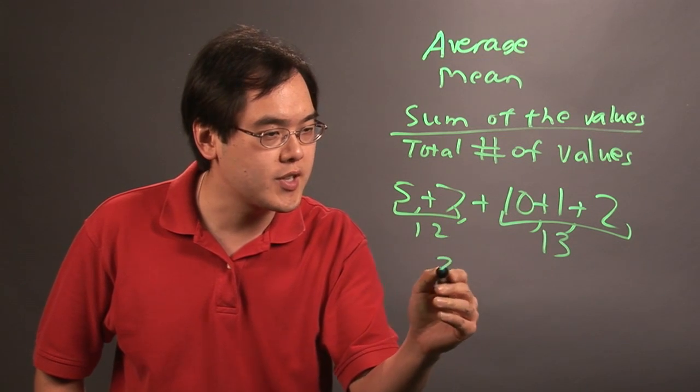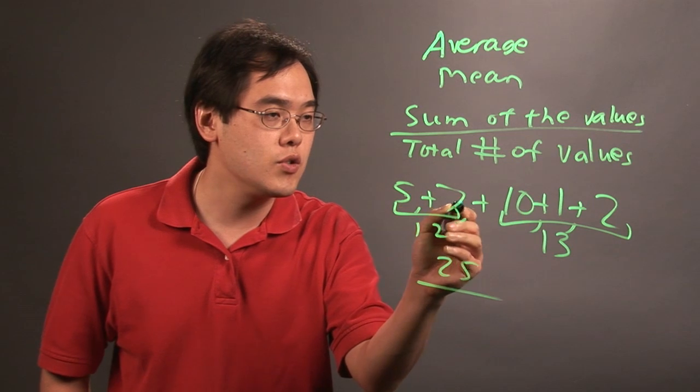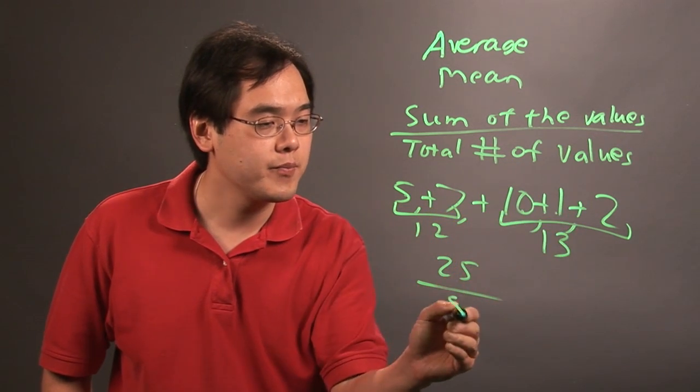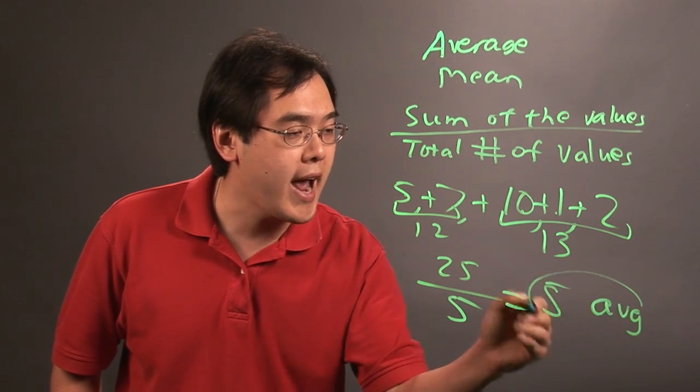So 12 plus 13, that's going to give you 25. And then you want to divide by how many numbers that you have total, 1, 2, 3, 4, and 5. 25 divided by 5 is going to be 5. That is your average.